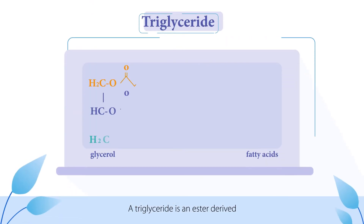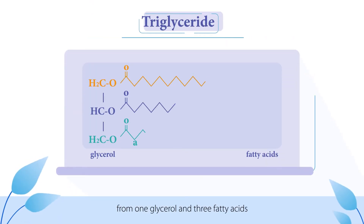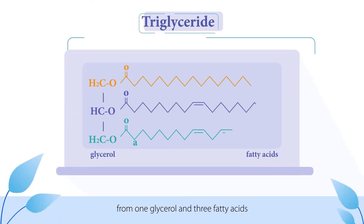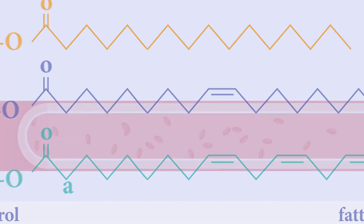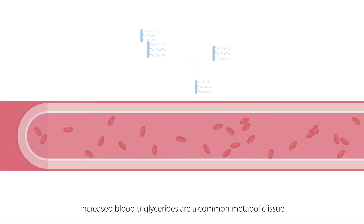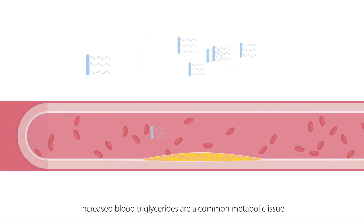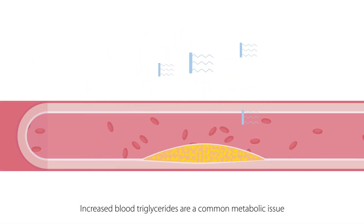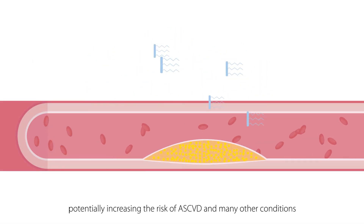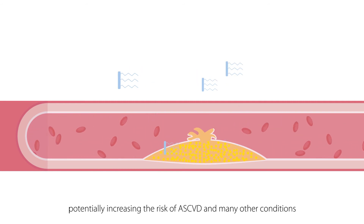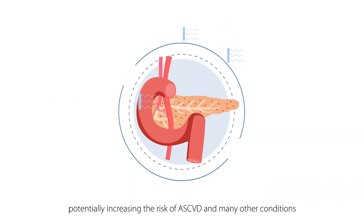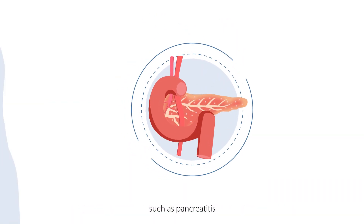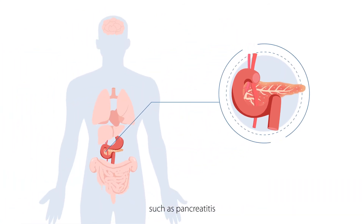A triglyceride is an ester derived from 1-glycerol and 3-fatty acids. Increased blood triglycerides are a common metabolic issue, potentially increasing the risk of ASCVD and many other conditions such as pancreatitis.